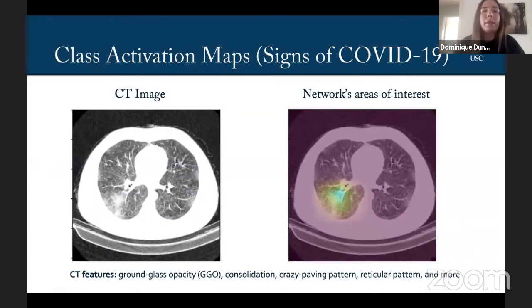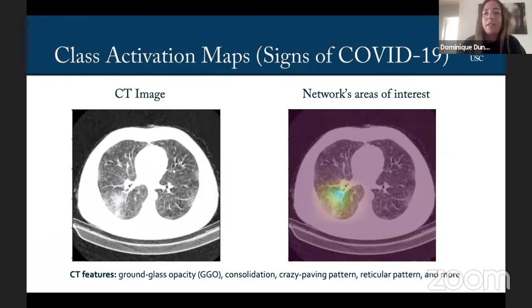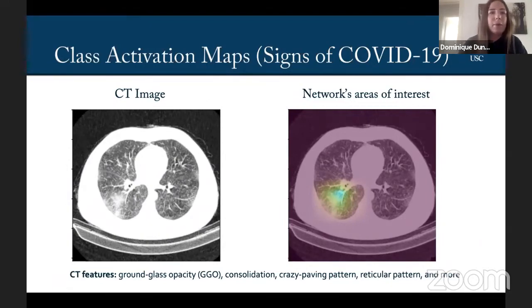Here you can see some class activation maps. There are many CT features of COVID-19 patients, like ground glass opacity, consolidation, crazy paving pattern, reticular pattern, etc. This just highlights the regions that were most important for our classification that we're doing.